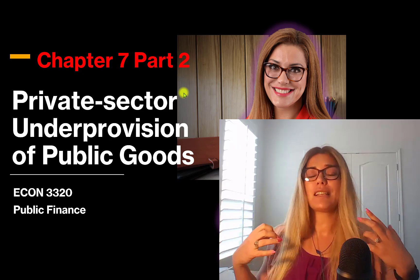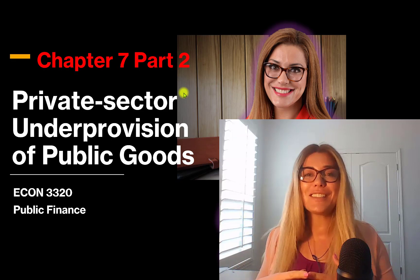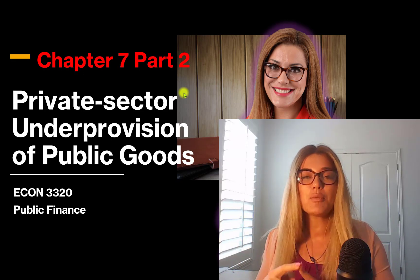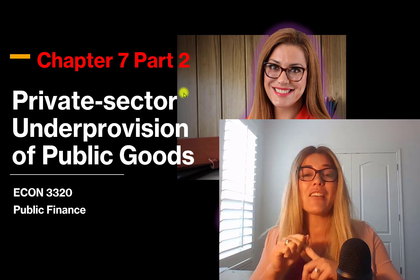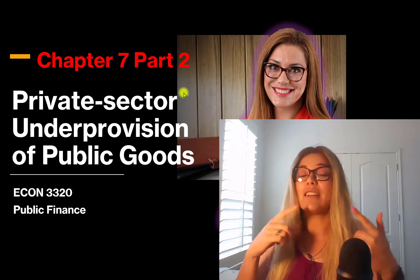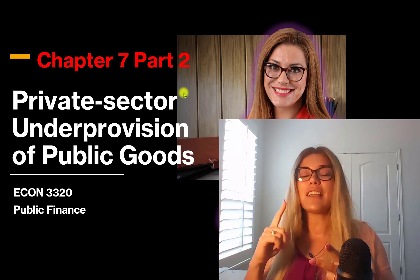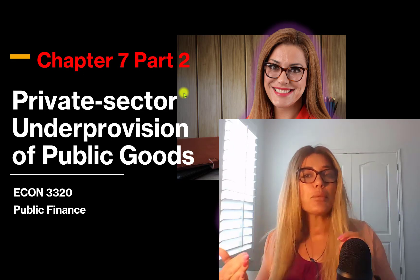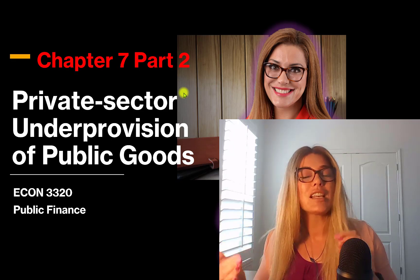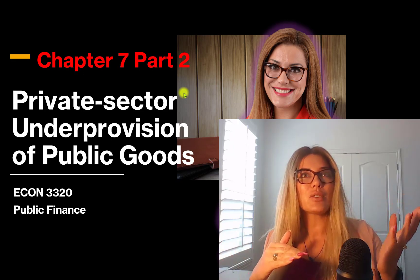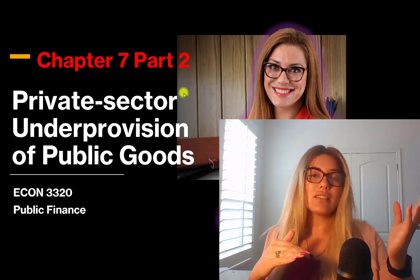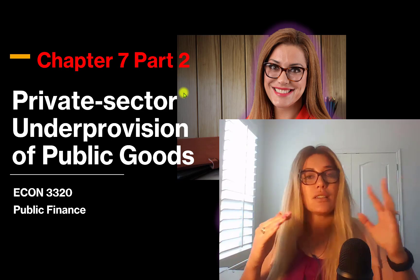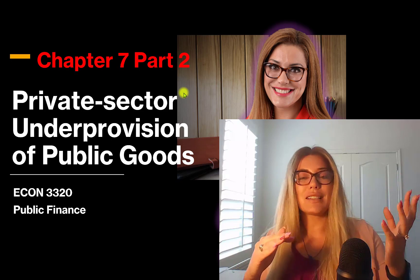This is the public finance and public goods chapter. In this chapter, we learned about the definition of public goods. Public goods are those goods that have certain properties — they're non-rival and they're non-excludable. These are pure public goods. We also have impure public goods, which are usually either non-excludable but rival, or non-rival but excludable.